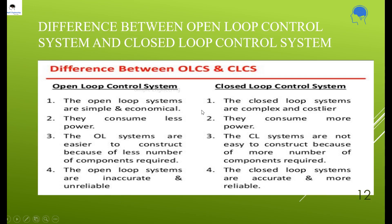Difference between open loop and closed loop: open loop systems are simple and economical, while closed loop are complex and costly. Open loop systems consume less power; closed loop consume more. Open loop systems are easier to construct as fewer components are needed, while closed loop requires sensors and error detection with more components. Open loop systems are inaccurate and unreliable, but closed loop systems are accurate and reliable. This concludes the discussion on transfer function and types of control systems — open loop, closed loop, their differences, advantages and disadvantages. Thank you.